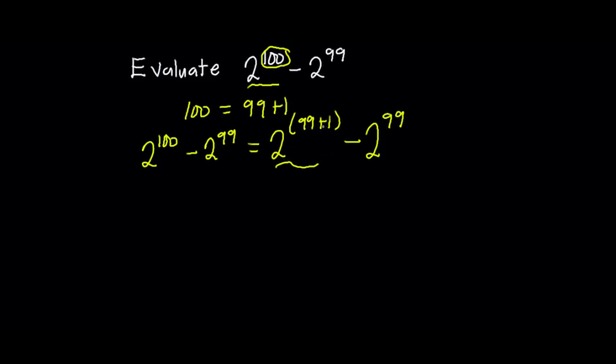...if I have a^(n+m), this is the same as a^n times a^m. So I'm going to apply this property here. This gives me 2^99 times 2^1 minus 2^99.